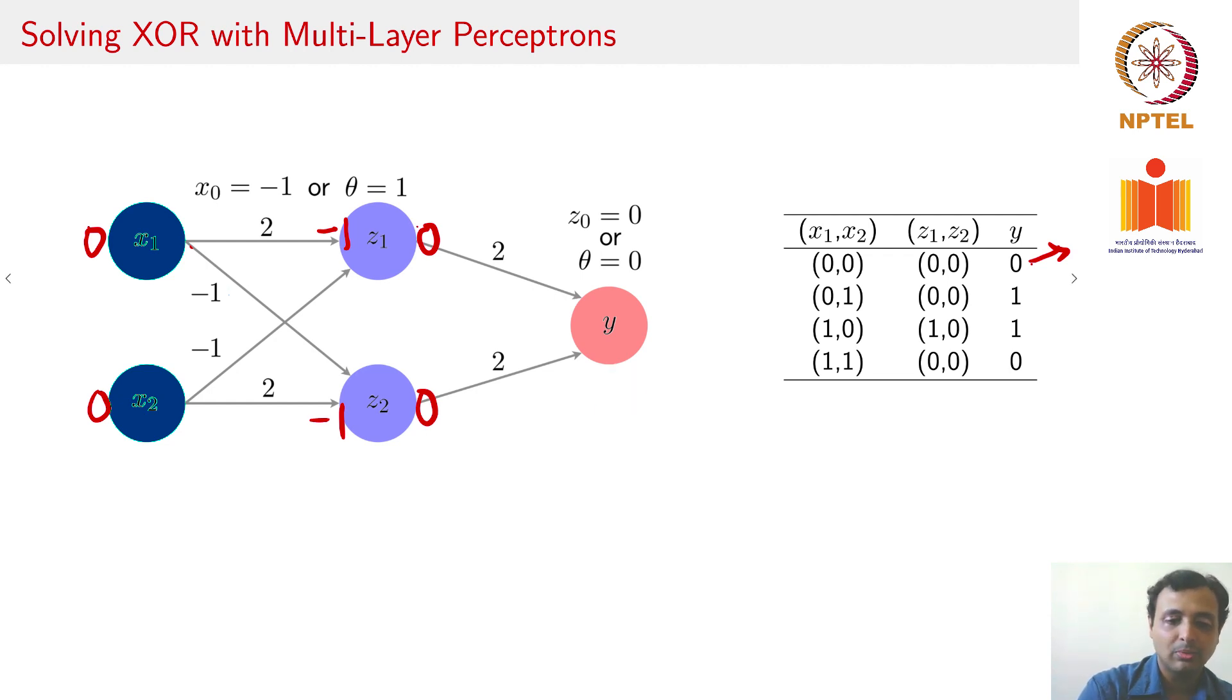Let us take the second case now and see how that works out for this particular scenario. Let us consider your input now to be 0 and 1. If that be the case, your Z1 is going to get a 0 and a -1 and a -1, which would turn out to be -2, which means the output would be 0. And let us see what Z2 would get. Z2 would get a 0 and a 2 and a -1, which would be 1, which means the output of Z2 will be 1, which means you are going to get an output of 2 here, because 2·1 + 2·0, which corresponds to a 1.